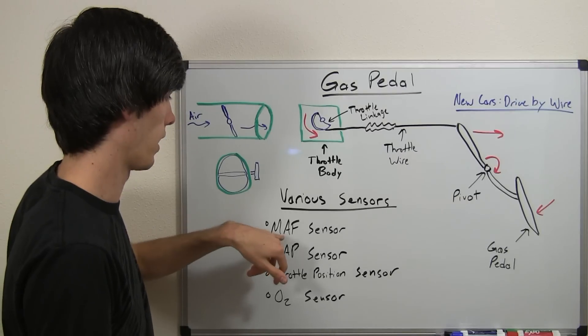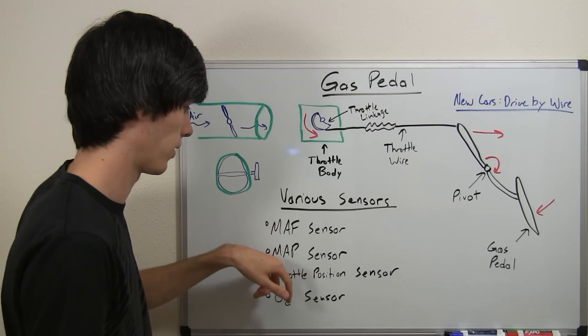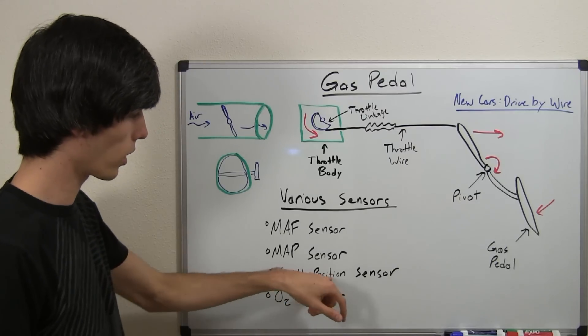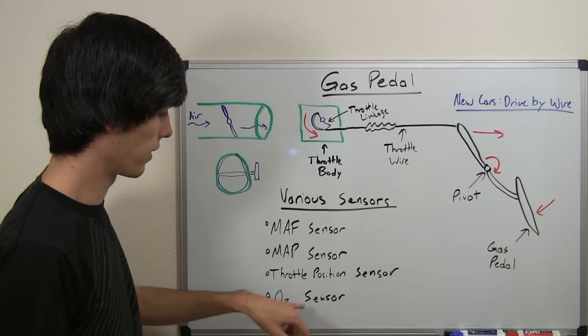So you've got a MAF sensor, mass air flow sensor, a MAP sensor, manifold absolute pressure sensor, a throttle position sensor, and an O2 sensor.